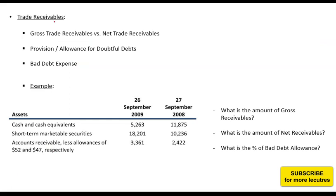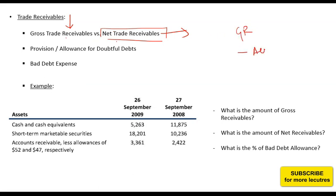When we talk about trade receivables, there are two types: gross trade receivables and net trade receivables. Usually on the balance sheet you will only see net trade receivables. However, as an analyst, you should also find out gross trade receivables and examine the trend and relationship between gross trade receivables and net trade receivables, because the reported number alone may not be sufficient.